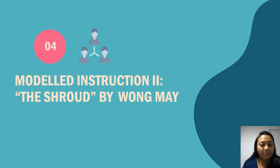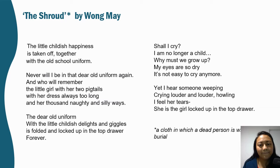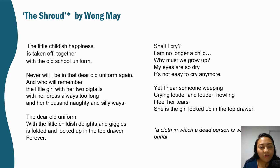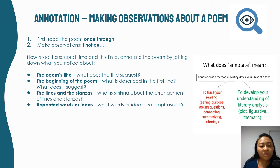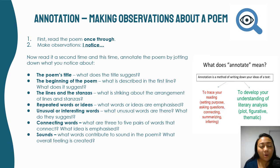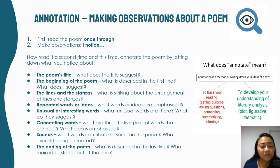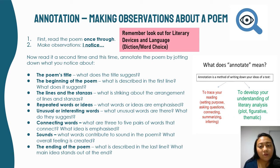Now let's go into your assignment, which is The Shroud by Wong May. Have a read through. Before we annotate, let's revise what annotation is all about. Read the poem once through, and when you make observations notice these things: the title, the beginning of the poem, the lines and stanzas, repeated words or ideas, unusual or interesting words, connecting words, sounds, and the ending of the poem. Annotation is crucial in literature. Look out for literary devices and word choice. Let's delve into the annotation.